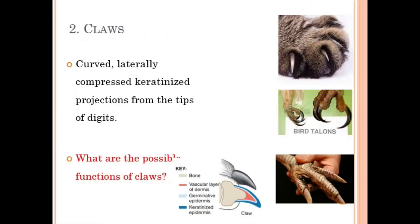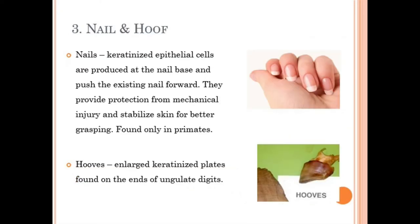Second are claws or nails — curved, laterally compressed, keratinized projections from the tips of digits. They are keratinized structures used to dig, to provide stability and friction while walking, to control animal movement, and to catch and tear prey. Nails and hooves are similar structures in mammals. Humans and primates have nails made of keratinized epithelial cells produced at the nail base, which push the existing nail forward. Hooves are similar structures present in ungulate animals like cattle — enlarged plates found on the end of digits.